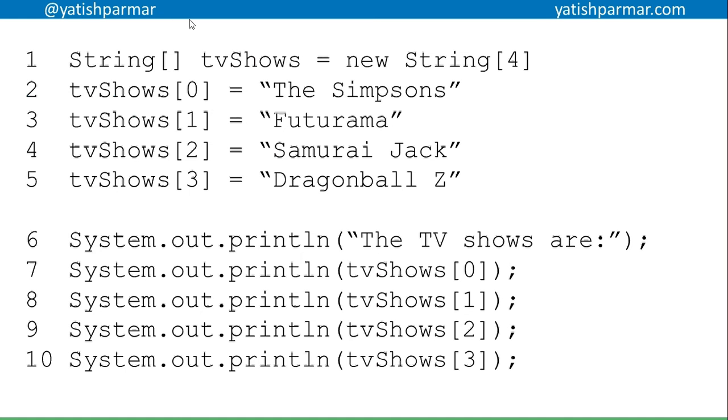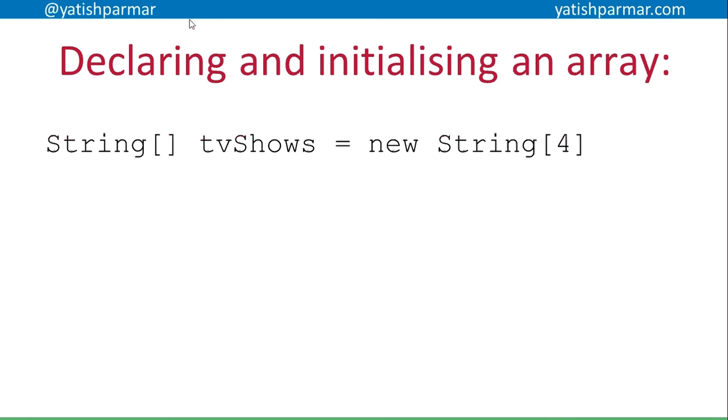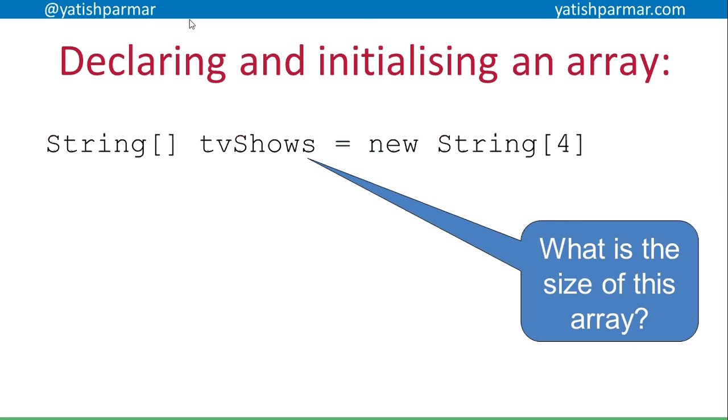Here's an example of declaring an array in Java. Line one: I'm declaring an array of TV shows with the identifier tvShows. Lines two to five: I'm storing various values in different positions in my array. Then lines seven through ten: I'm outputting those values by referring to them by their place. You can see I've declared my array. What is the size of the array? We know it's got four elements in it.